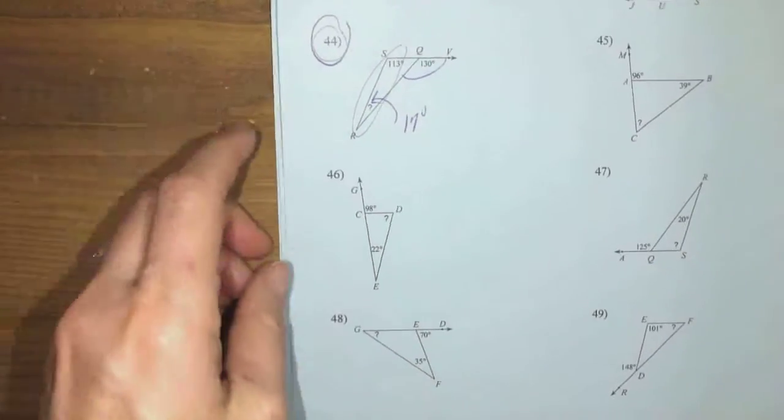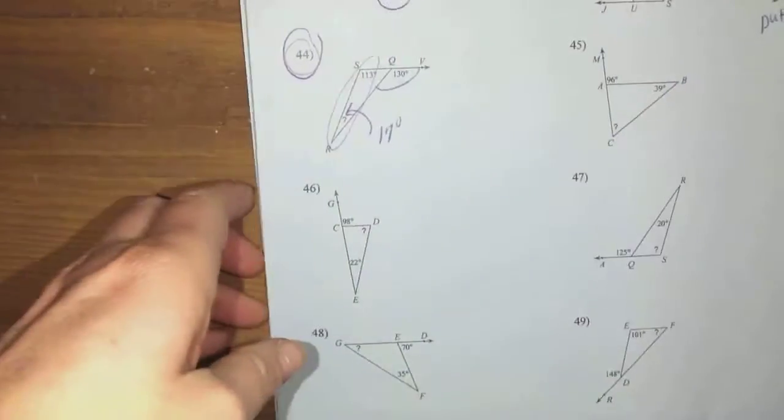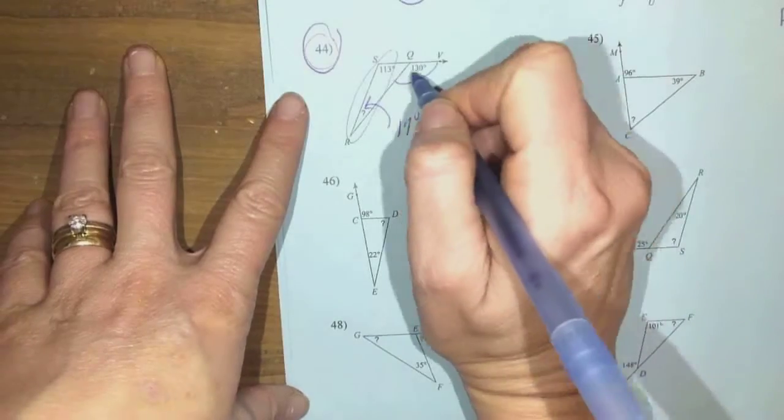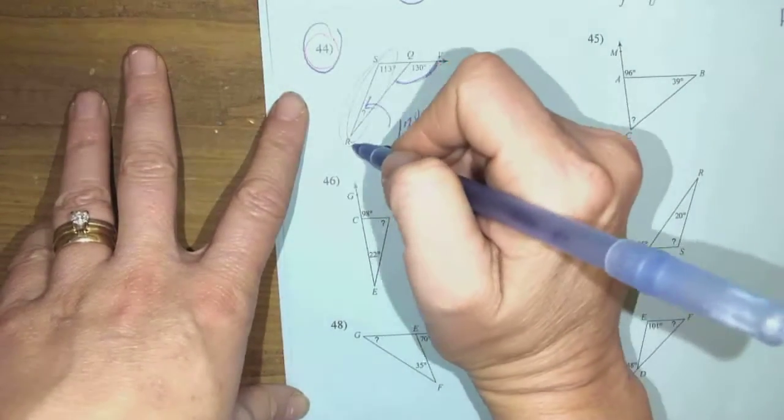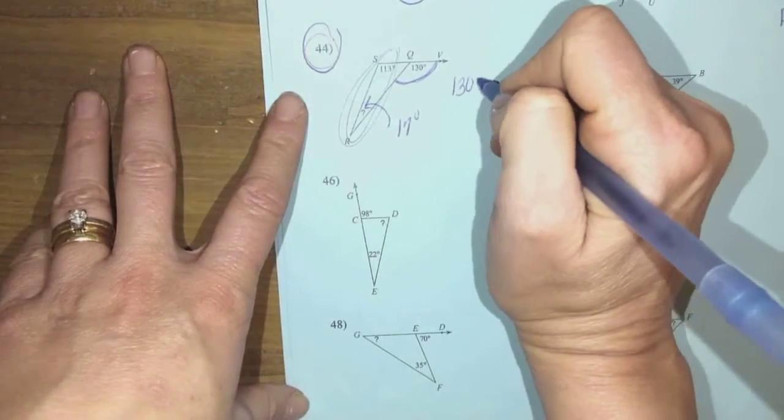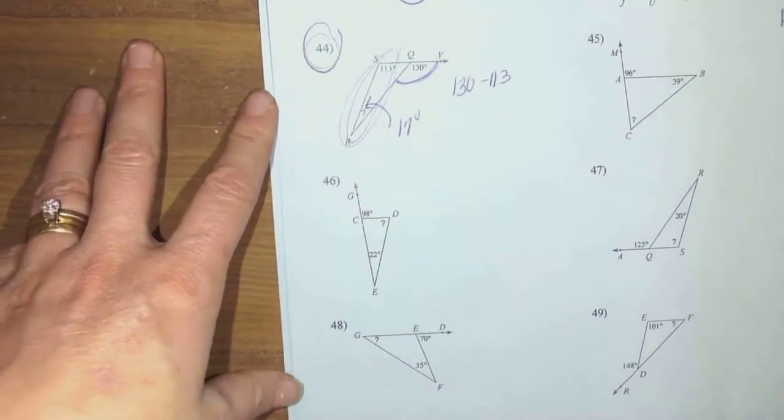Okay, last two, more problems in the blue packet to make sure that you are actually—no, maybe about four more problems. I already started this one here. They gave you the exterior angle, which we know equals two interior put together. So if I do 130 and subtract 113, I'll get this guy up here for that missing angle.